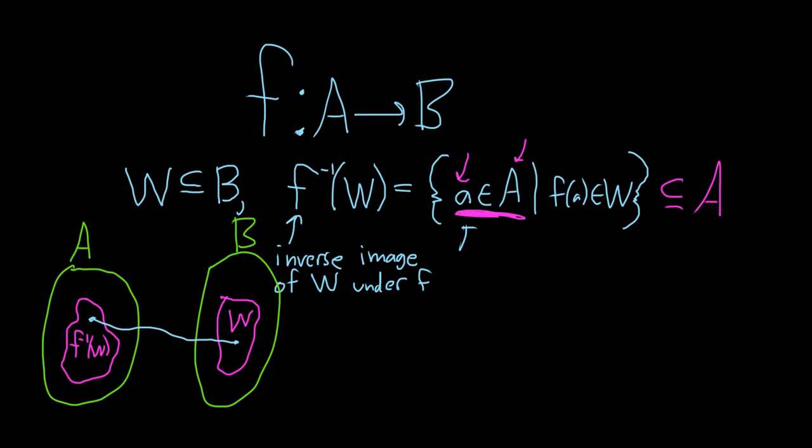So if you have an element in W, you can find some little a in capital A such that little a goes to f of a. Let me say that again. Let me use a different color. So if you have an element in W, this green dot here is our element in W, that means there's some element in A, so little a, such that it goes there.